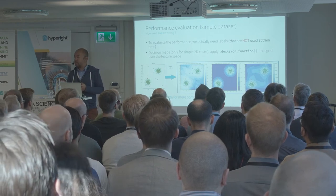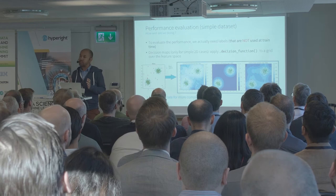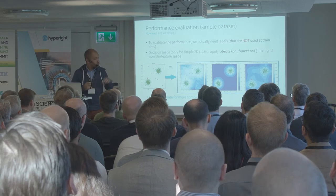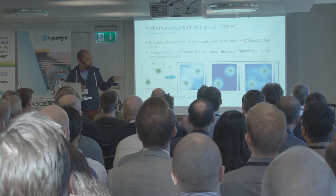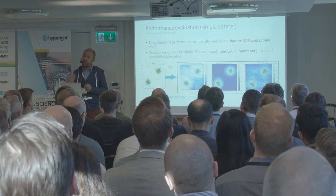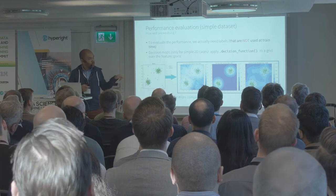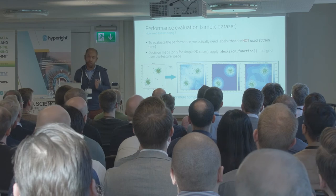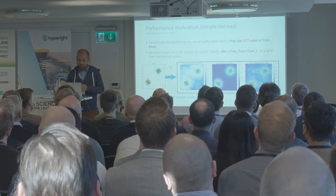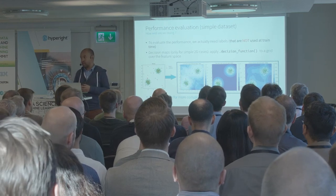How should you evaluate those algorithms? As a first step, imagine very simple two-dimensional data with two clusters representing normality and a few points sampled at random representing outliers. You fit your algorithms on those data points, then apply a decision function on a predefined grid so you can plot decision maps showing regions of inliers and outliers. That's okay for simple examples, but in practice you don't get two-dimensional datasets.